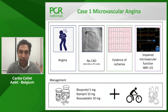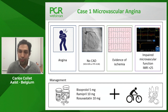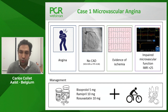To conclude Case 1: this patient had definitive microvascular angina with all four criteria — angina, no epicardial CAD, evidence of ischemia, and impaired microvascular function. In terms of management, he was prescribed bisoprolol 5 mg and was already on ramipril and statins. We also emphasized improvement in exercise and healthy diet.